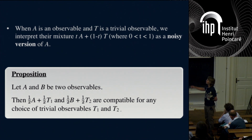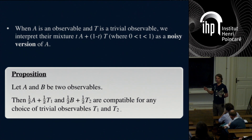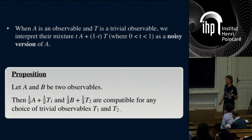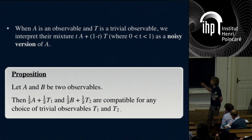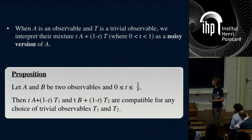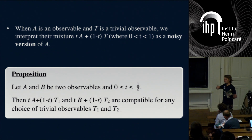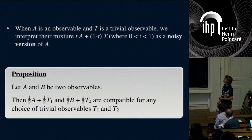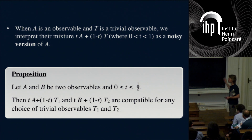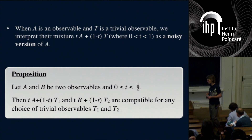If I now have two observables A and B, and I take a mixture of A with trivial and a mixture of B with trivial—noisy versions of A and B—then they are always compatible. You can choose your trivial observables however you want; if they are trivial, you can produce compatible observables no matter where you start, even from incompatible measurements. And slightly more generally, if I take a smaller mixing parameter T, those are even noisier observables, and compatibility can only increase—they must be compatible.